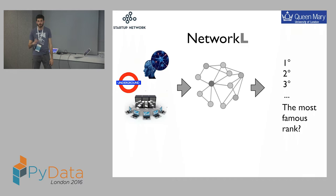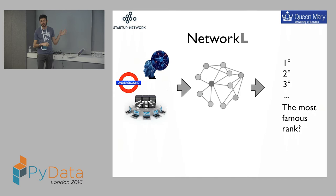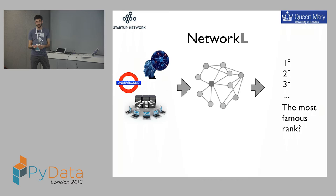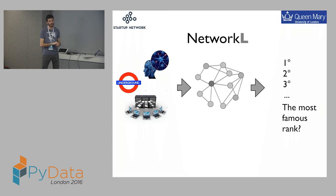Let's start from the first part of the name: network. A network can be represented as a graph — you have nodes and edges, and these are useful models to represent many real-world systems. We use it for representing the brain network, the transportation system like the tube, or communication systems. The nodes are the system elements — the neurons in the case of the brain, and the synapses represent the links. In the underground system, the tube stations and the connections between them. With network analysis, you try to rank nodes — for instance, try to understand which is the most important or critical node in a communication system.